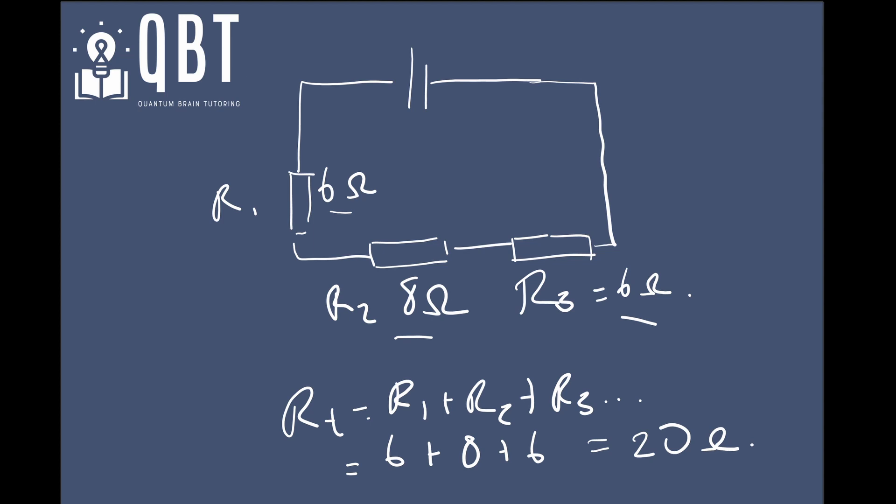Okay, and that is how we can calculate the resistance, the total resistance in a series circuit. And if you wanted to find a particular value, let's say you wanted to find R1, you would just subtract the sum of R2 and R3 from the total. Okay, so that's how we do that.